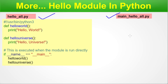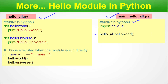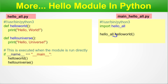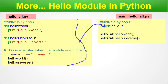If you want to reuse the code — instantiate this module in another Python file — here is main_hello_all.py. We write 'import hello_all' (no .py extension) and then call 'hello_all.hello_world()' and 'hello_all.hello_universe()' using the dot separator. This way you can instantiate the module in multiple Python files and call these functions as many times as needed.